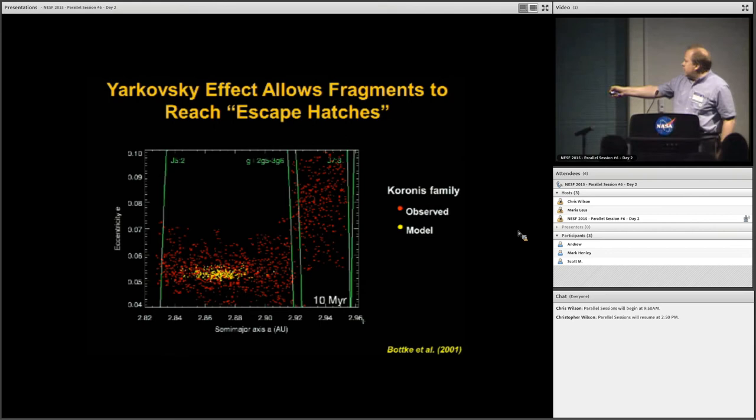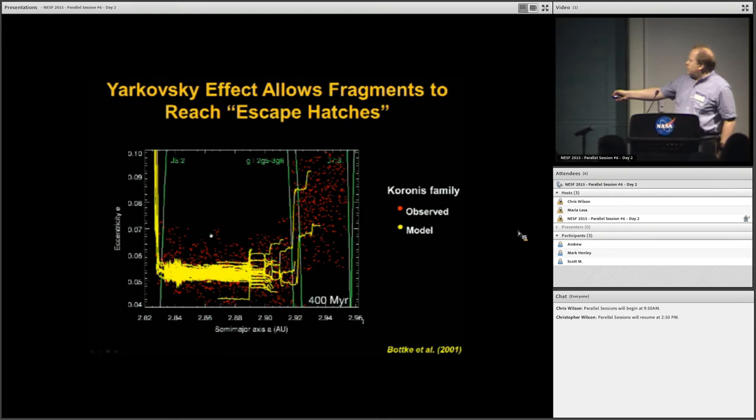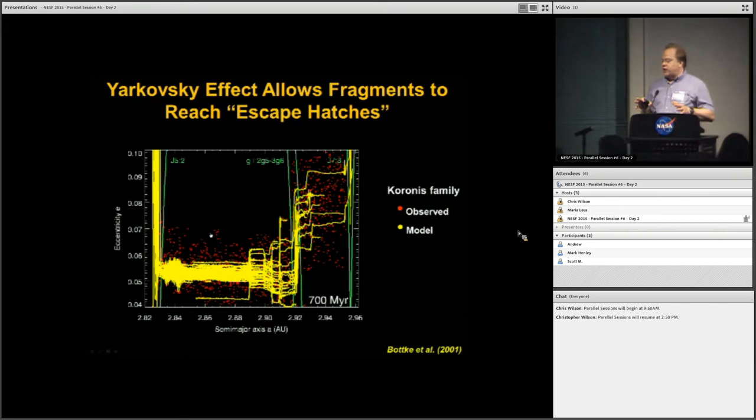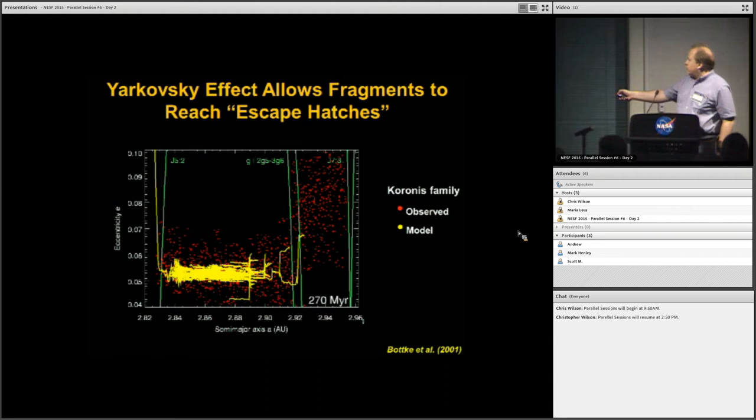To give you a feeling for this, this is semi-major axis versus eccentricity. These red guys are the observed Coronas asteroid family, so this is what we see from one of these breakup events. This is what the hydrocodes would predict for that Coronas family. I'm going to start this and you'll see how things evolve. Some things go in, some things go out. And when you see them making these jumps, they're hitting special zones where the gravitational kicks of the giant planets become very important. These are called resonances, and they can actually change their eccentricities or push them all the way out of the asteroid belt.